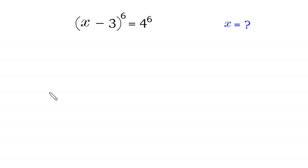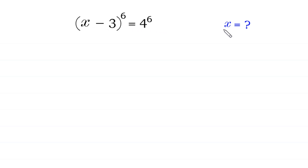Hello, welcome to how to solve this very nice algebra equation. (x minus 3) whole to the power 6 is equal to 4 to the power 6. We need to find all possible values of x.